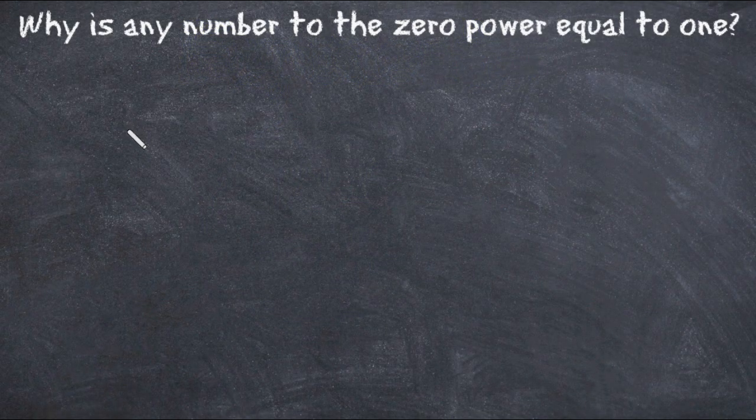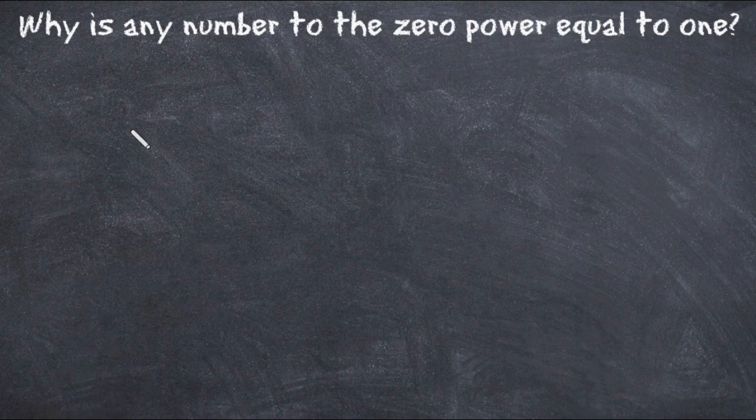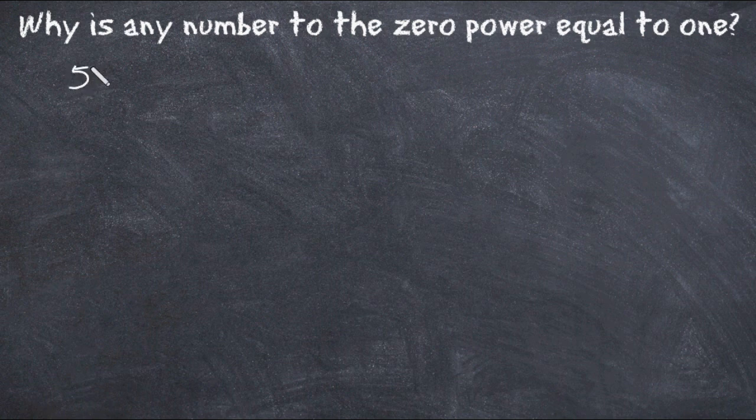In this tutorial we're going to explain why any number to the zero power equals one. To demonstrate this, I'm going to write a series of numbers. I'm going to choose a random number, I'll choose five, and set it equal to a power.